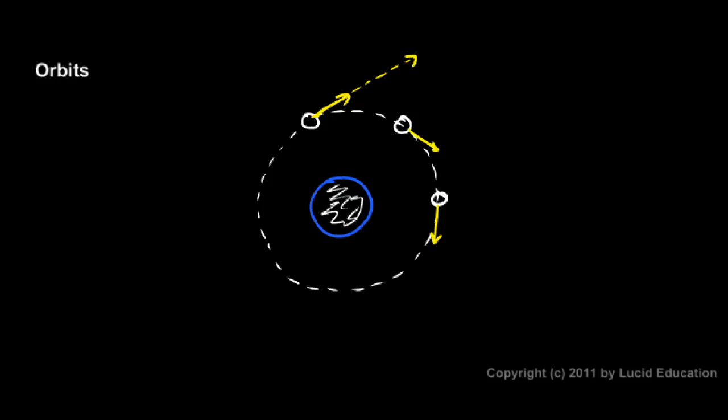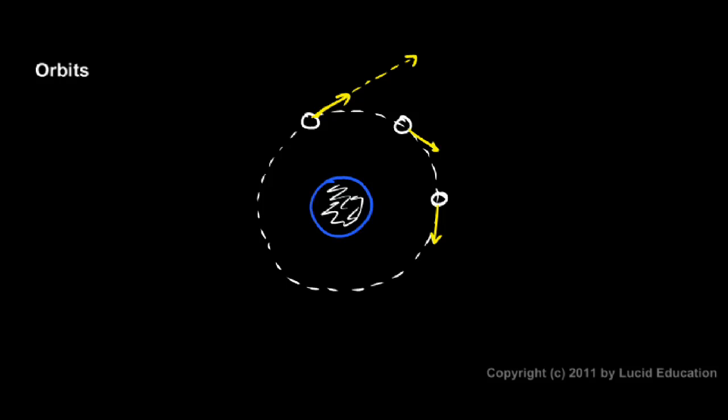And Newton figured out why an object stays in orbit. And he did this by doing what we call a thought experiment. Newton couldn't actually put something in orbit. He couldn't actually perform an actual experiment to see if orbits worked or not. They didn't have rockets back then. He did not have the technology or the means to do this.